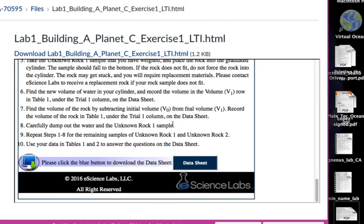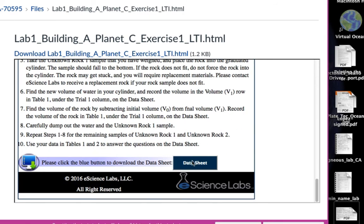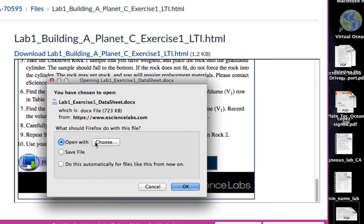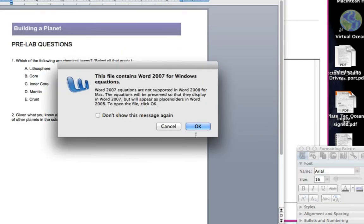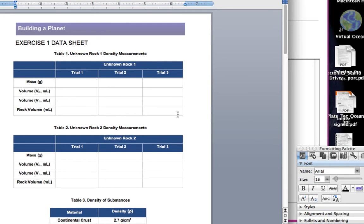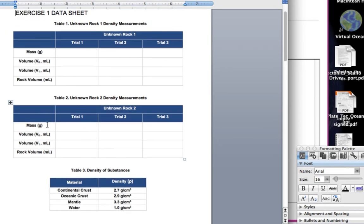At the bottom here, you'll want to follow these instructions. You're going to download the data sheets. These are the ones that you're going to submit for the assignment. You'll have the rock samples. There's unknown rock one, unknown rock two. You're going to weigh them on your little balance. You're going to determine their volume, the volume displaced here. You'll figure out the volume of the rock here. Then over here, you'll determine the density.